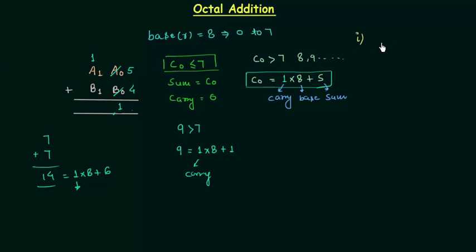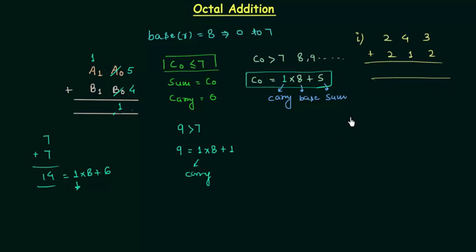Now we will move to the first example on octal addition. The first octal number is 2, 4, 3 and the second octal number is 2, 1, 2, and we have to add them.